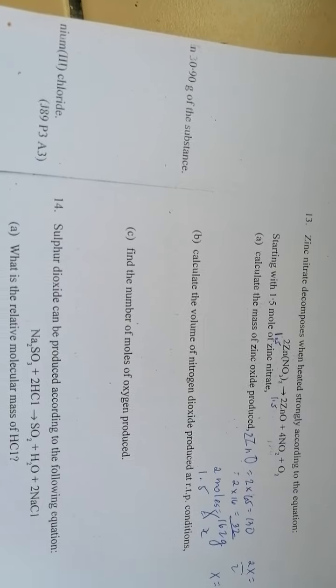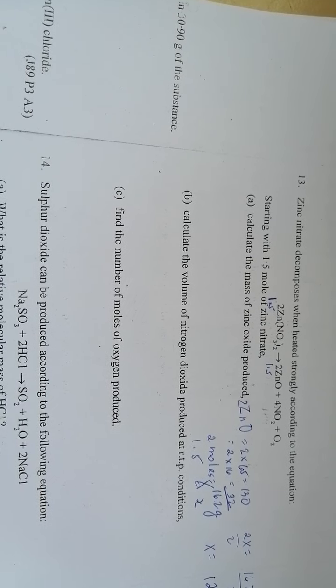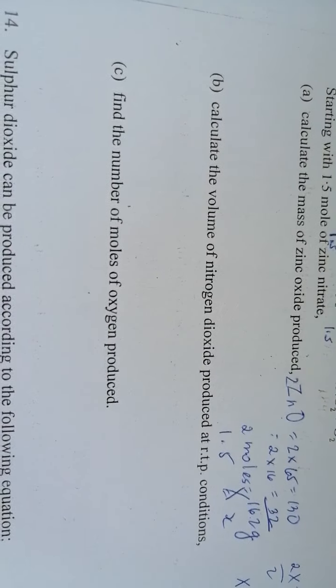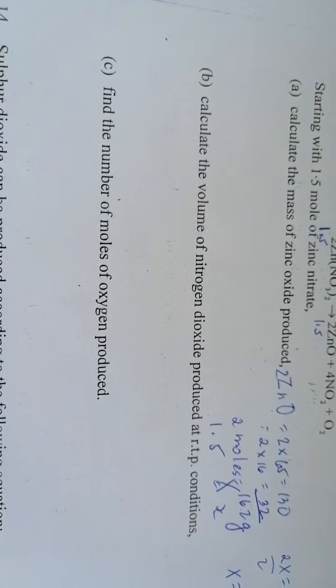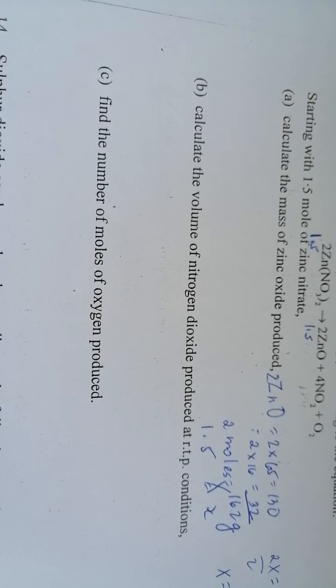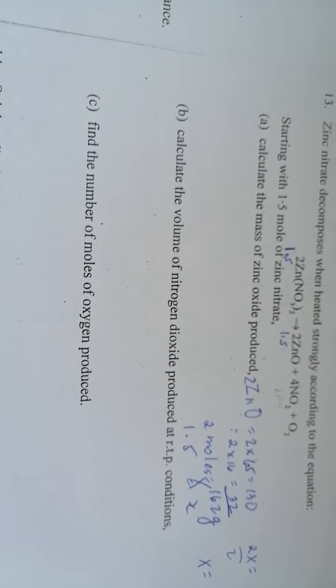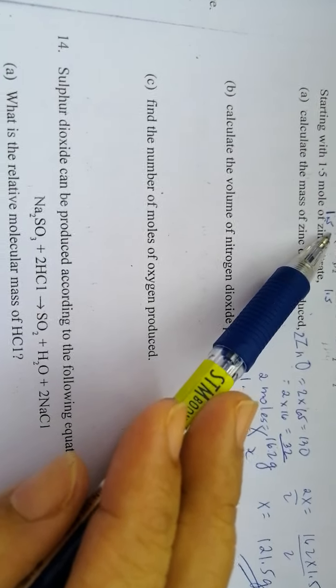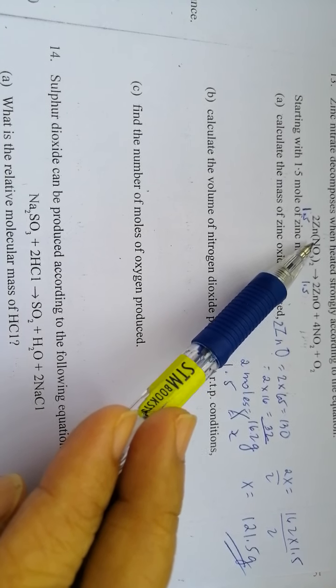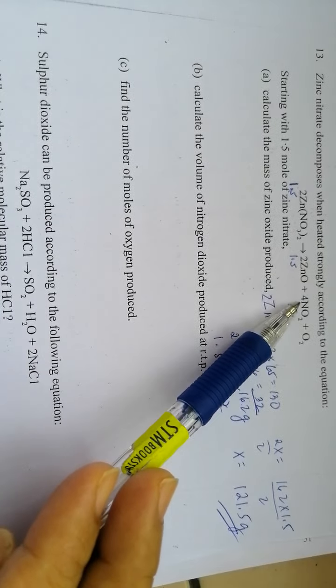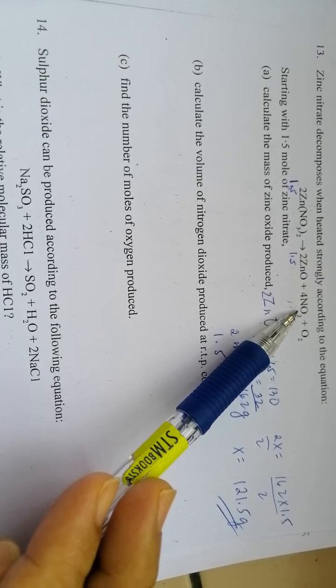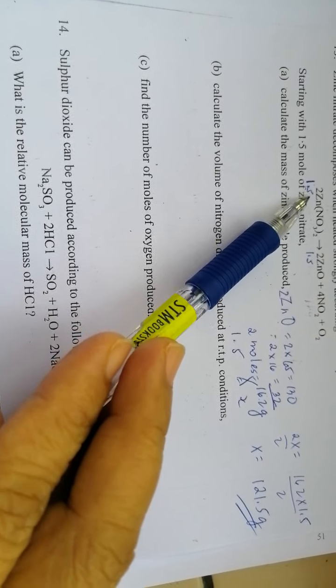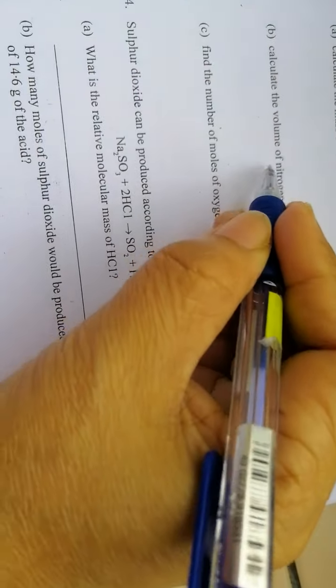For letter B, calculate the volume of nitrogen dioxide produced at room temperature and pressure conditions. We go back to the equation: if 2 moles of zinc nitrate is used, then 4 moles of nitrogen dioxide will be produced. But how about if 1.5 moles of zinc nitrate? Again, we make that ratio.